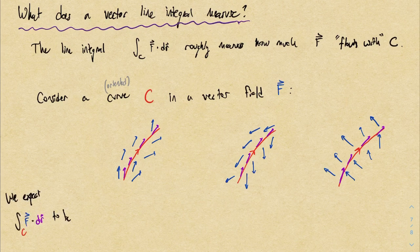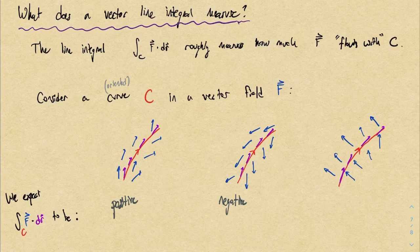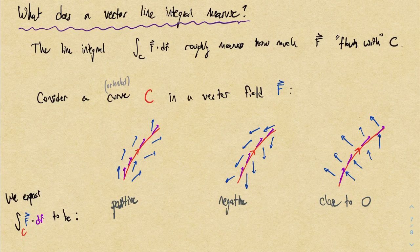In the first scenario, the vector field flows with the curve, so all the dot products are positive and we expect the line integral to be positive. In the second scenario, the vector field moves in the opposite direction, so all dot products are negative and the line integral is negative. In the third scenario, the vector field is perpendicular to the tangent vectors, so we expect the line integral to be close to zero. There are various physical interpretations like work or flux, but mathematically we're just measuring how much the vector field flows with the curve.